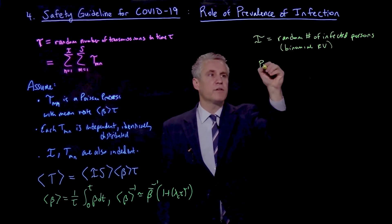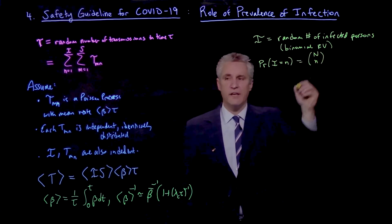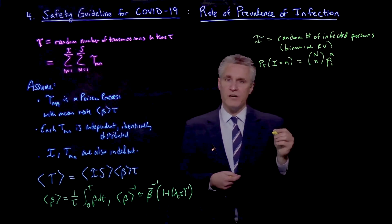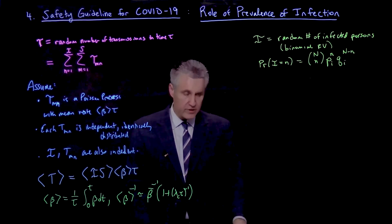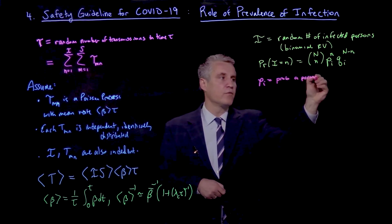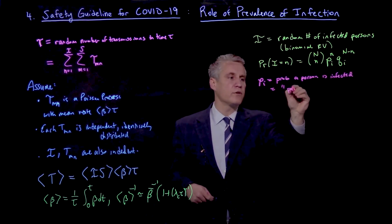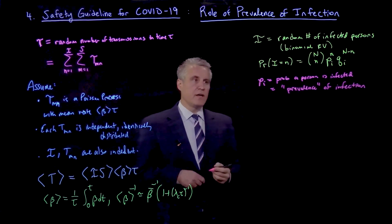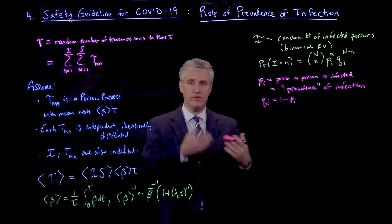That means the probability that the infected number equals some value n is the number of ways you can choose n infected people out of N total people in the room, times the probability that any one of them is infected, which we'll call pi, and q_i is the probability that the others are not infected. The important new variable is pi — the probability that a person randomly selected from the population and placed in this room is infected. This is also sometimes called the prevalence of the infection in the population. And q_i, of course, is just 1 minus pi.